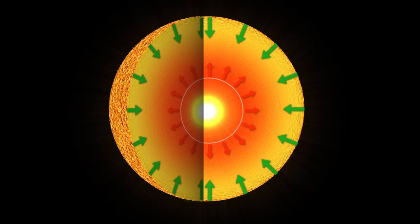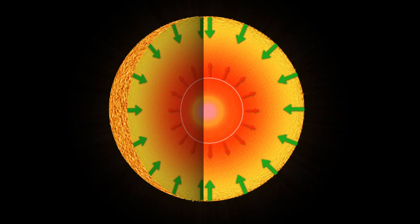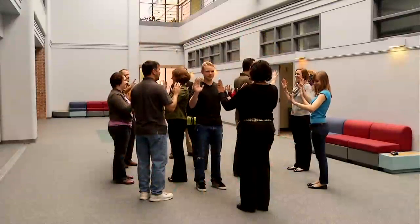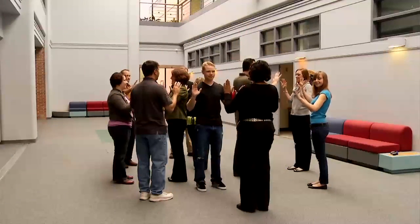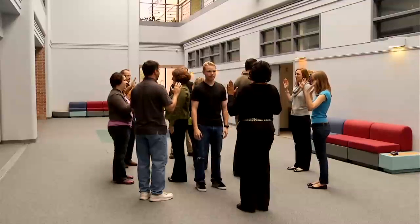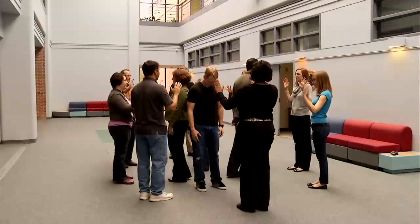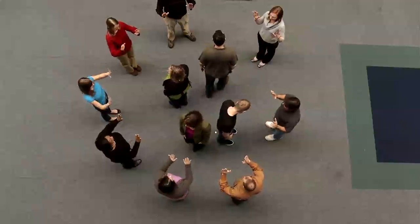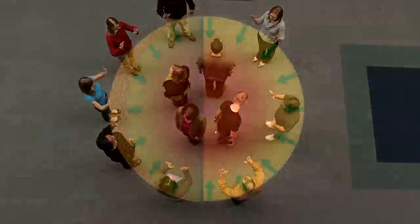Eventually, the star runs out of hydrogen to fuse in the core, and the balance of gravity and energy from fusion is broken. When this happens, gravity wins, and the participants in the core of the star drop their hands and move slightly closer together. The participants in the shell never lower their hands, as gravity is always in effect.